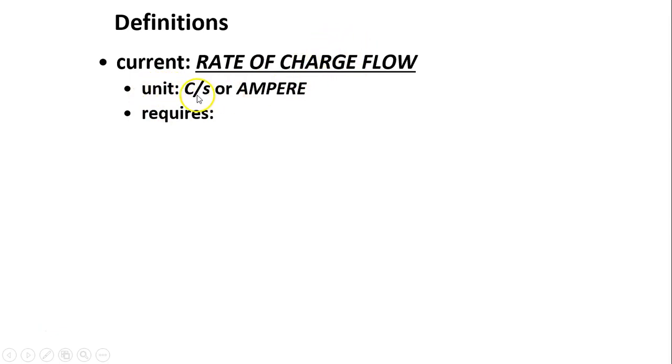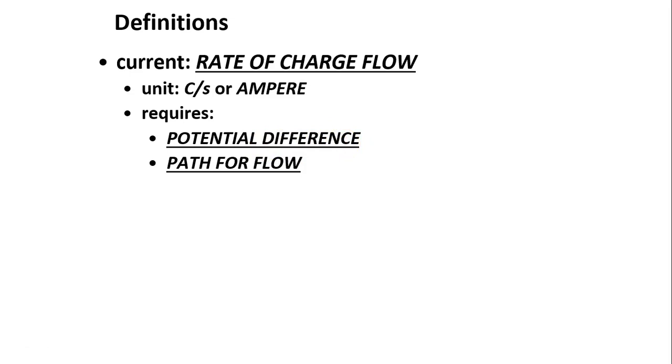Charge—the unit of charge is coulombs. Coulombs over time—we have a name for it called ampere. It requires potential difference; that's the circuit's potential difference provided by the battery or the source of energy. Next one is path for flow, so you have to have a circuit to have current.